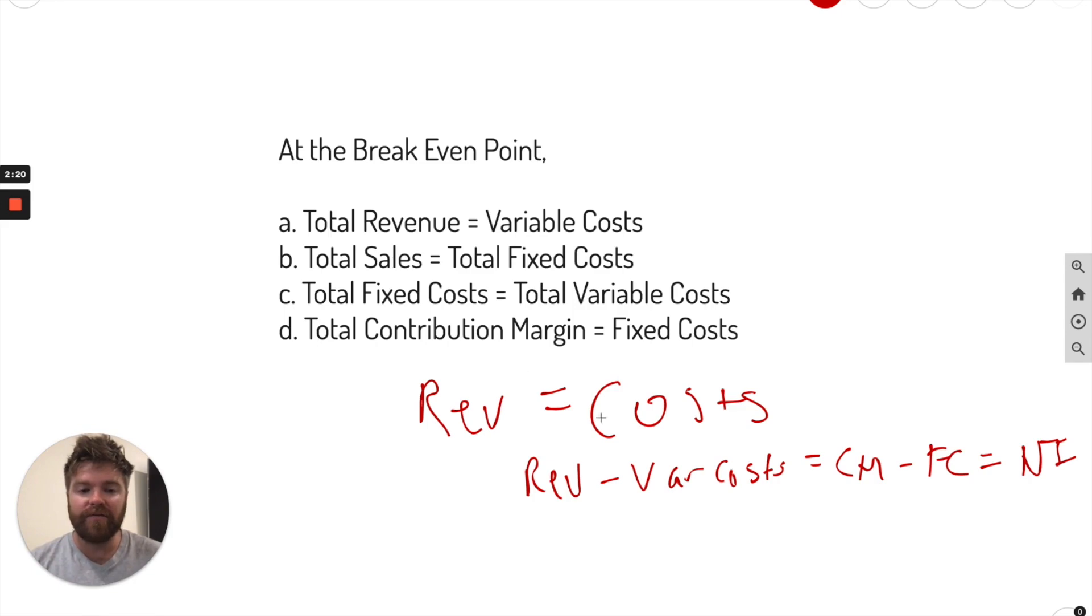Now we have to figure out which ones actually fit here. So revenues equal variable costs? Well, that's not exactly correct because if you think about it, we're looking to get all our revenues equal our costs. So revenues have to subtract out variable costs first, and that's going to equal our margin, contribution margin. So we can start with margin minus fixed costs equals net income. But if you really move this around, if our margins equal our fixed costs, that's break-even.